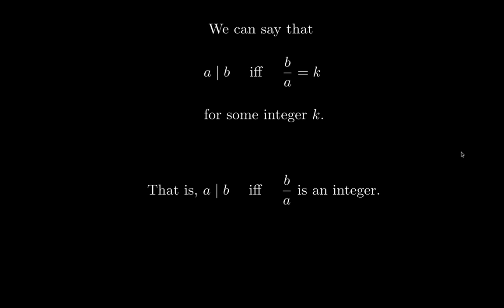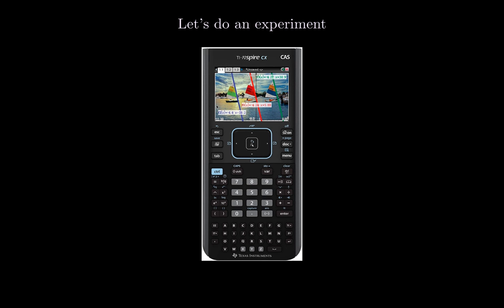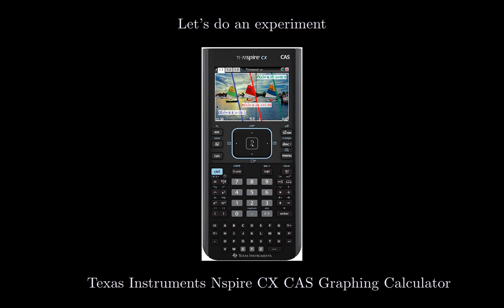Checking if a divides b is equivalent to checking that b over a is an integer. Now, is this something that can be entirely done using a calculator or computer? Let's ask the question: is this problem easily solved by a calculator? Let's look into that and see if that is all we need. Let's do an experiment.